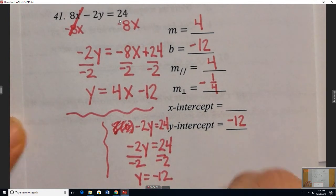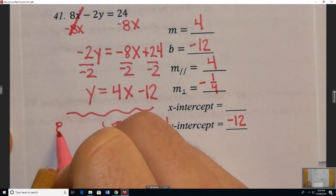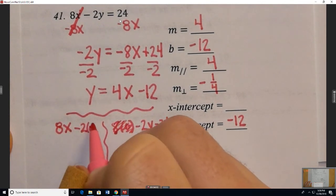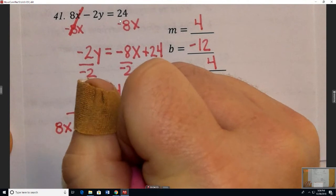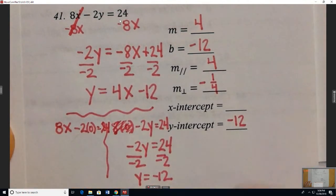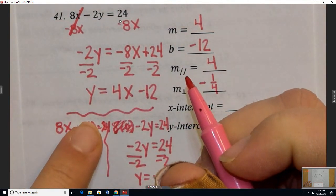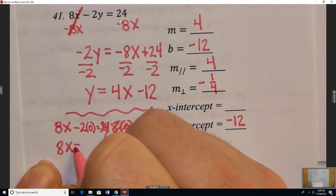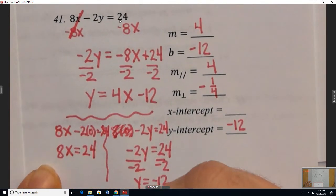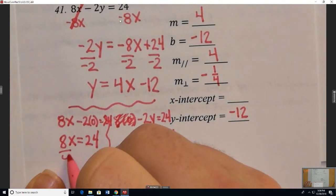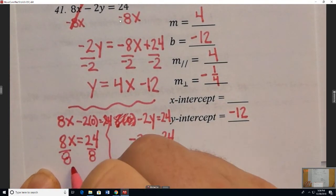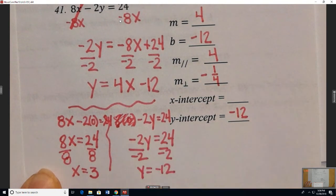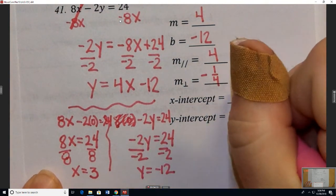In order to find the x-intercept, it's the value of x when y is 0. So we could take the standard form of the equation, put a 0 in for y. But really, it's kind of like covering this part of the equation. So if we cover that, we end up with 8x equals 24. And then if we solve that by dividing, we get x equals 3 for the x-intercept.